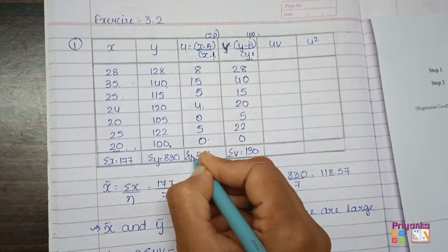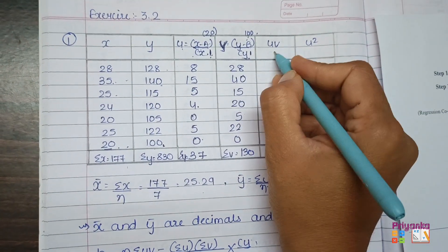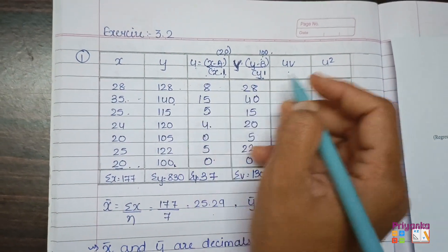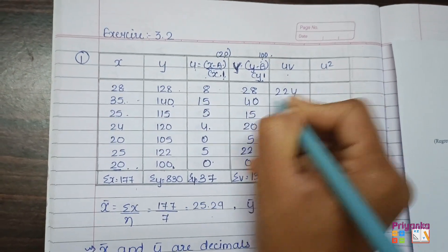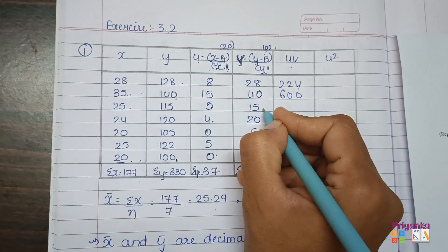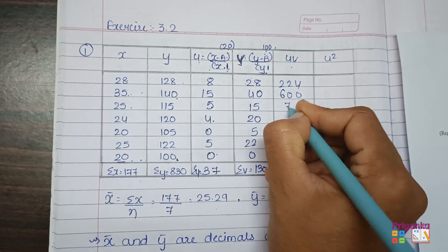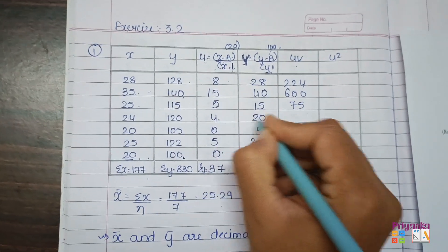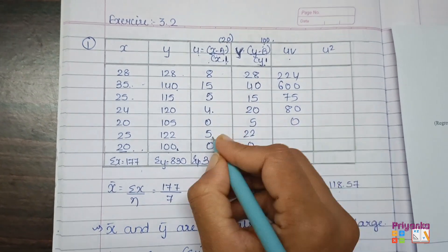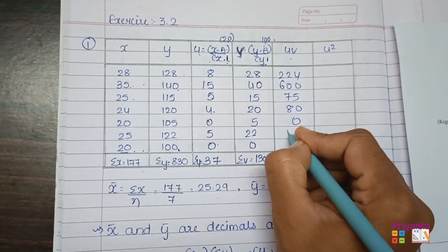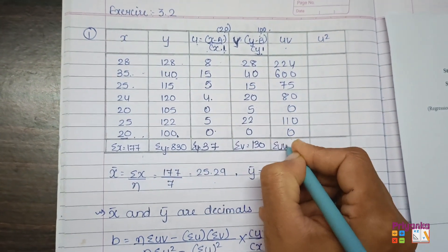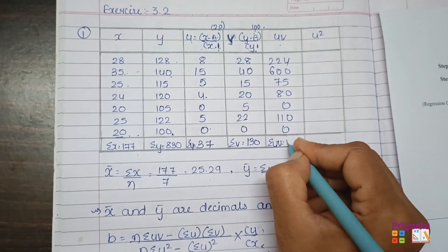At the end, sigma v is 130 and sigma u is 37. The next column is uv — the multiplication of the u and v columns. The products are: 8×28=224, 15×40=600, 5×15=75, 4×20=80, 0×5=0, 5×22=110, 0×0=0. The total sigma uv is 1089.